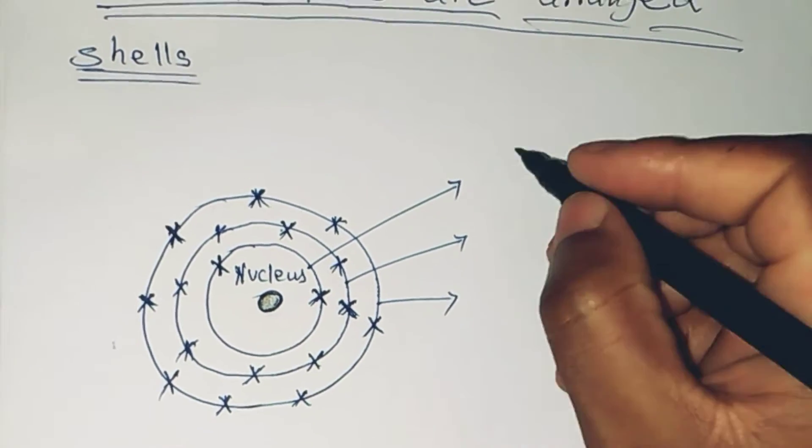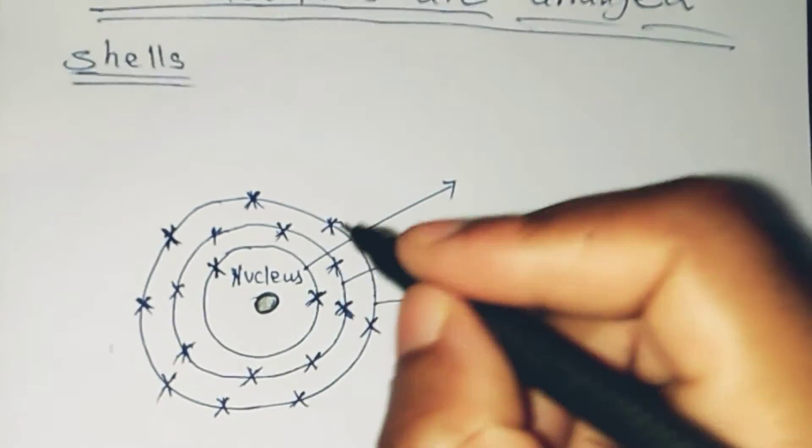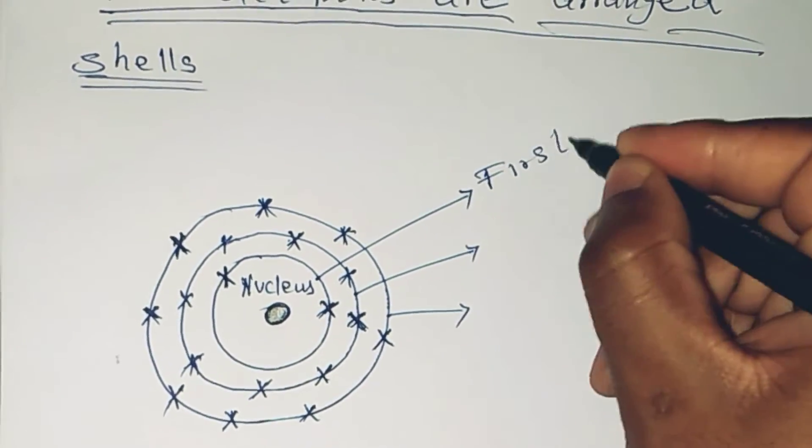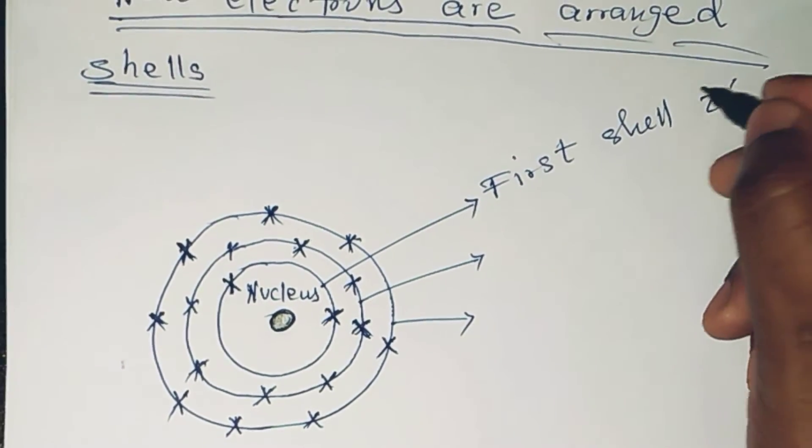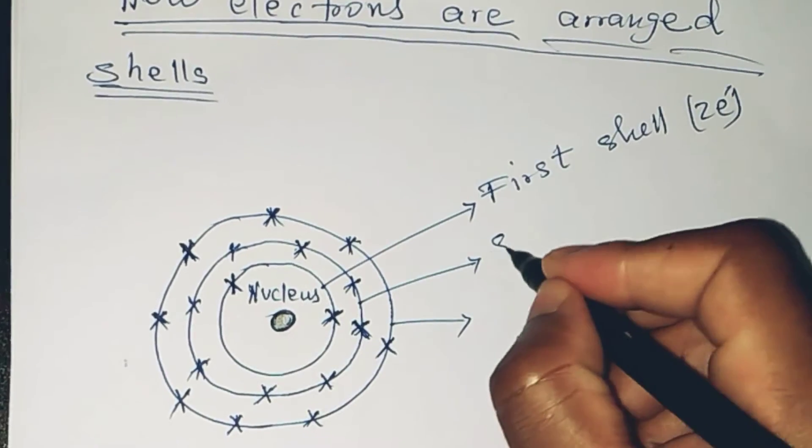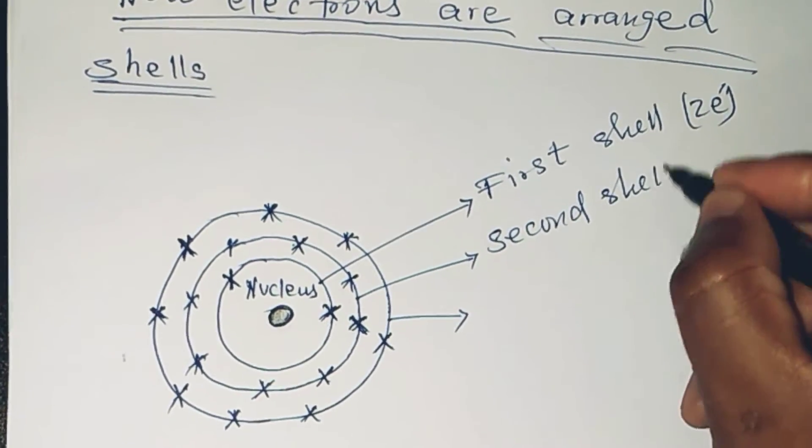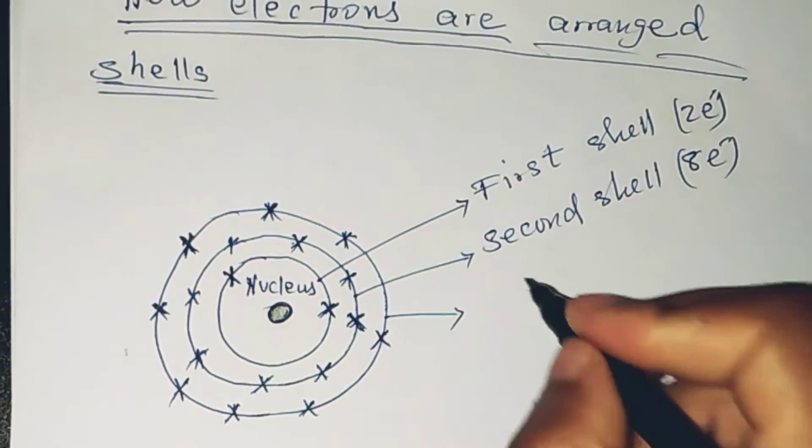For the first shell, it holds only two electrons—two electrons maximum. This is the second shell, which holds eight electrons.